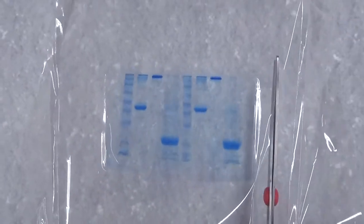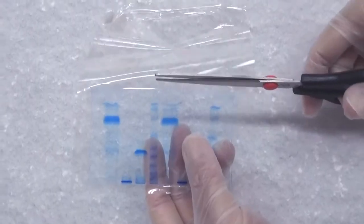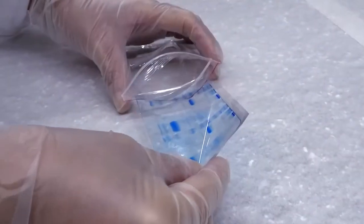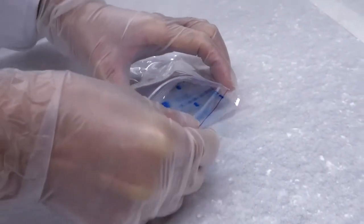Cut unwanted food wrap around the gel with a pair of scissors. Put the gel into a ziplock bag for long-term storage.